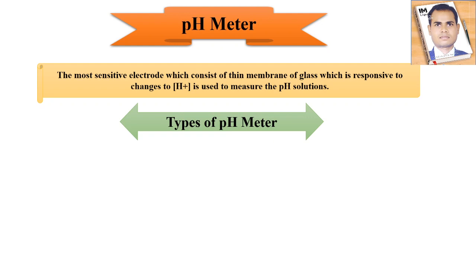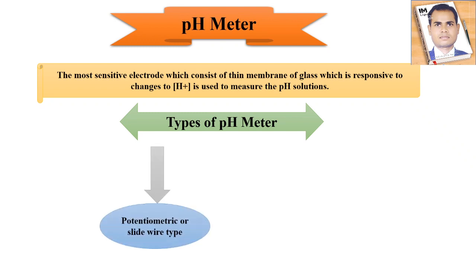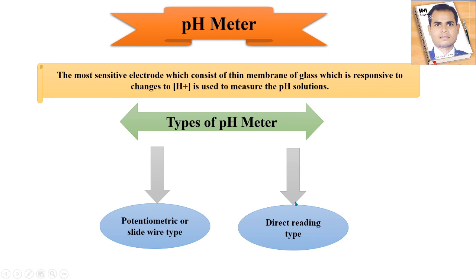Now, which types of pH meters are there? We can see first of all there is the potentiometric or slide wire type — this is the first type of pH meter. The second is the direct reading type. So there are two types of pH meters: the first one and the second one.